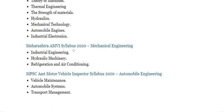The optional topics are as follows: you can attempt questions under Section B or questions under Section C. Section B covers Mechanical Engineering topics — Industrial Engineering, Hydraulic Machinery, and Refrigeration and Air Conditioning. Section C covers Automobile Engineering topics — Vehicle Maintenance, Automobile Systems, and Transportation Management.